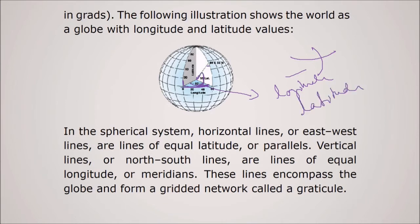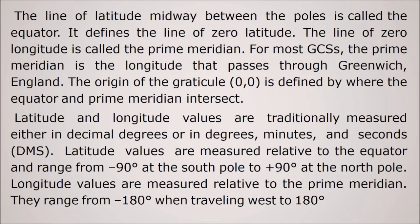So in a spherical system, horizontal lines or east-west lines are lines of equal latitudes. These are called parallels. So these are parallels. Vertical lines which you see here, these are nodes of lines. These are lines of equal longitude or meridians we call it. These lines encompass the globe and form a gridded network called the graticule as you see here. So the line of latitude midway between the poles is called the equator as you see in the figure. So it defines the line of zero latitude.